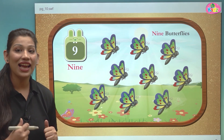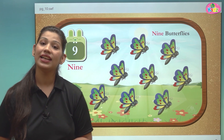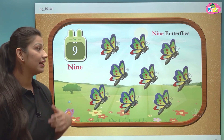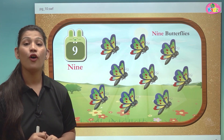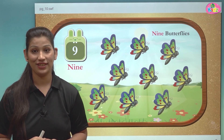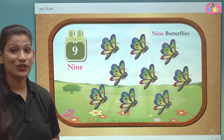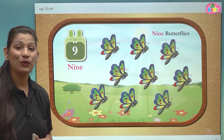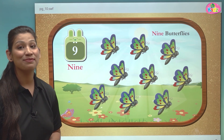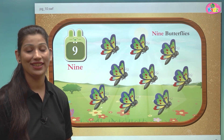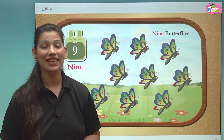How many players? 9 players. 9 comes after 8. 9 is the biggest number of one digit. Jo sabse bada number hota hai one digit ka woh hota hai number 9. N-I-N-E, 9.